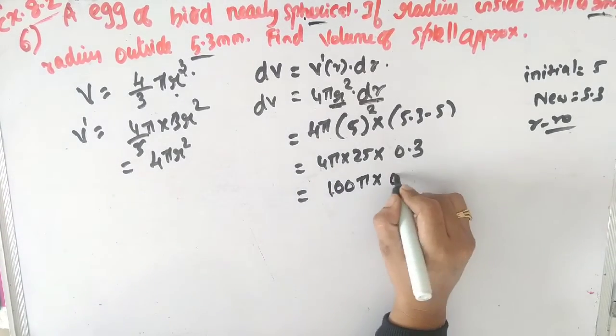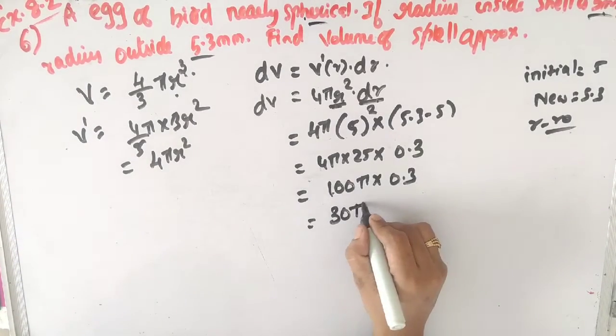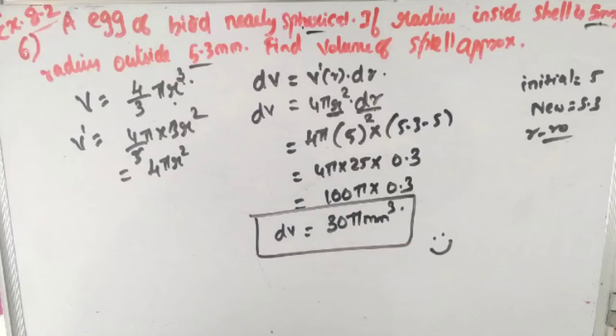30π is the difference in volume. The volume units are mm³ since the radius is in millimeters. If you have doubts, please comment. Bye-bye.